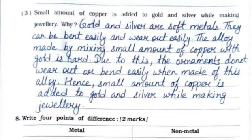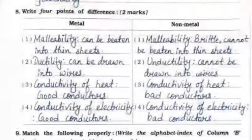Third: why is a small amount of copper added to gold and silver while making jewelry? Gold and silver are soft metals that bend easily and wear out easily. The alloy made by mixing a small amount of copper with gold is hard, so ornaments do not wear out or bend easily. Hence copper is added to gold and silver while making jewelry.